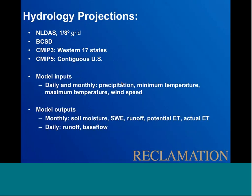For the hydrology data, we're on the same one-eighth degree grid, using the BCSD downscaled climate data to feed into the VIC model. The CMIP3 hydrology is only available for the western 17 states, but for CMIP5 it covers the entire contiguous U.S. You can download daily model inputs including precipitation, min and max temperature, and wind speed, as well as model outputs including soil moisture, SWE, runoff, potential ET, actual ET, and base flow.